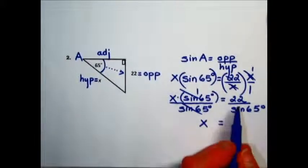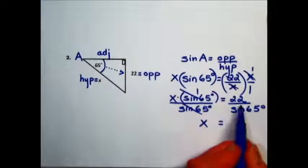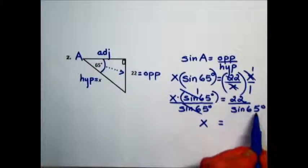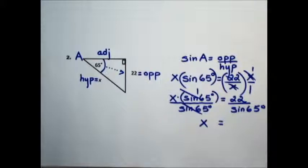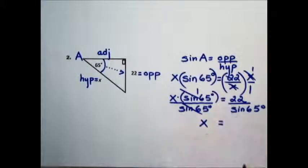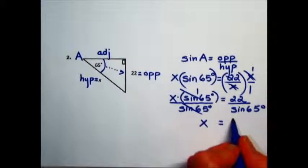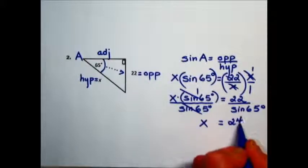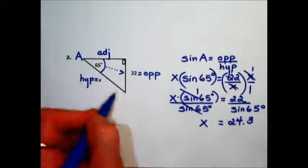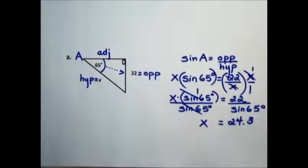And our last step to finish and find the value, then, is to take 22 divided by the sine of 65. Regardless of your calculator, the last thing you need to do is hit equals to perform that division operation. And rounding to the nearest tenth, you should find that x has a value of 24.3, the longest length in this right triangle.